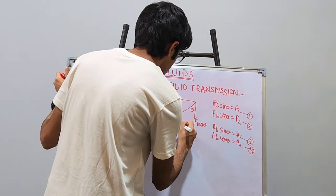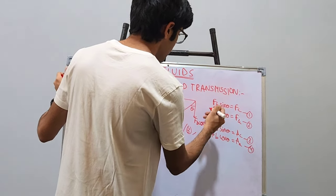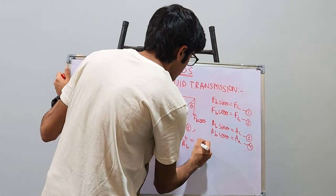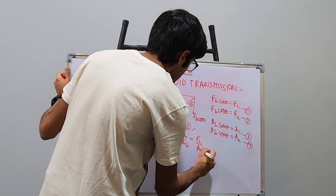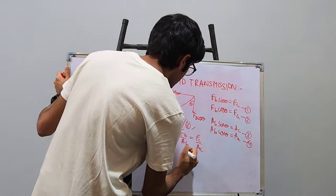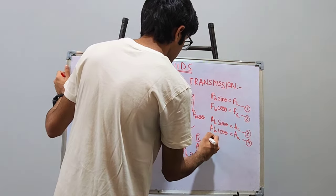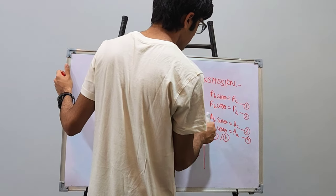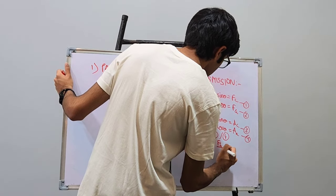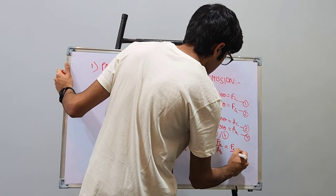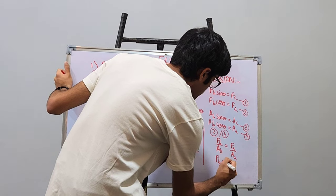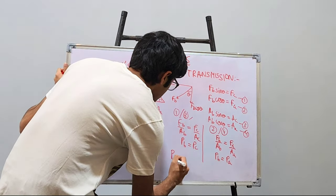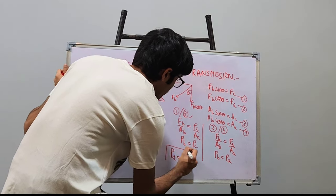Let us divide the first and the third equation. Dividing equations 1 and 3, sin theta gets cancelled out, so we get FB by AB is equal to FC by AC. Pressure is nothing but force upon area, so this gives us pressure at B is equal to pressure at C. Now dividing equations 2 and 4, cos theta gets cancelled out, so we have FB by AB is equal to FA by AA, giving pressure at B is equal to pressure at A. So pressure at A is equal to pressure at B is equal to pressure at C. This is the proof of Pascal's law of fluid transmission.